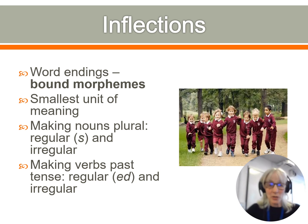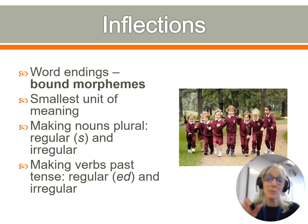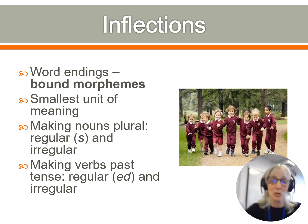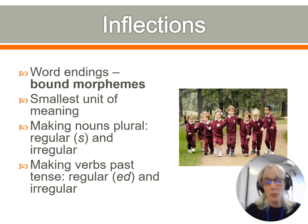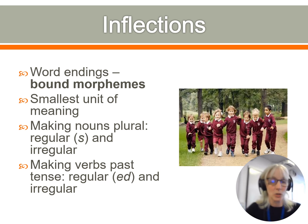Inflections — there aren't many in English. They are word endings and they do have meaning, but bound morphemes are not words; they have to be attached to another word. We have -s to make nouns plural — that's the regular form — and we have -ed to make verbs past tense, also the regular form. There are irregular forms, such as children rather than childs.